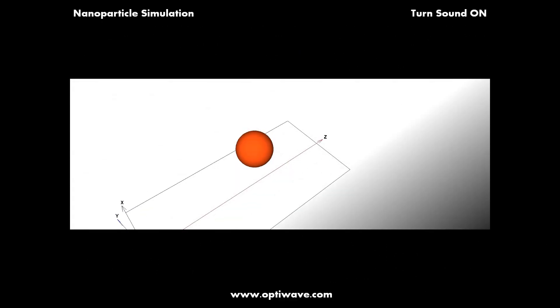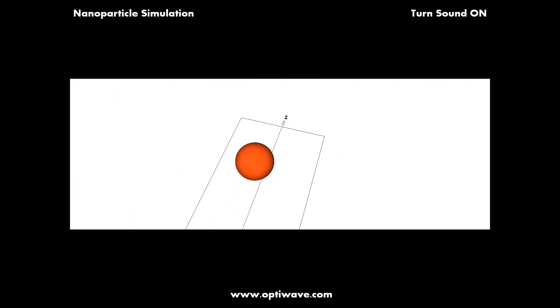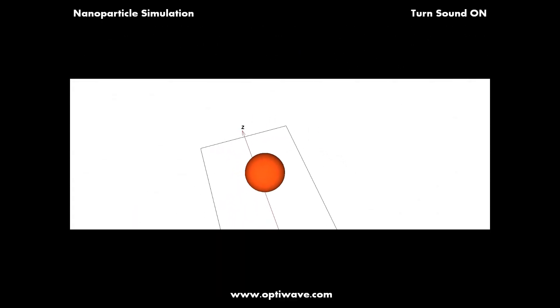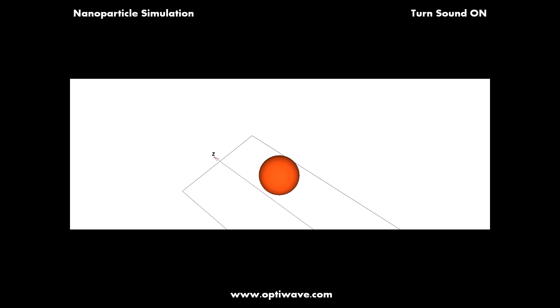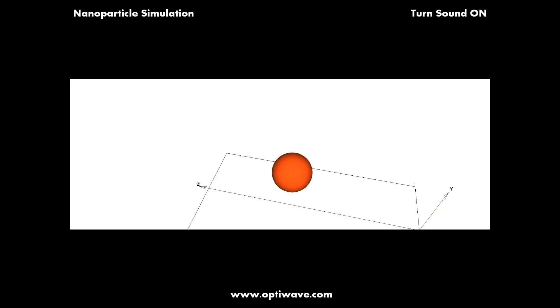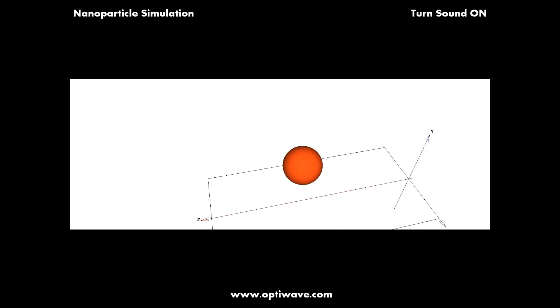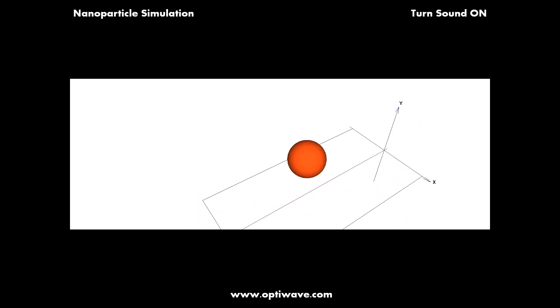Welcome to OPTI FTTD's nanoparticle simulation video. In this video we calculate the transmission spectrum of a gold nanoparticle using the finite difference time domain method.